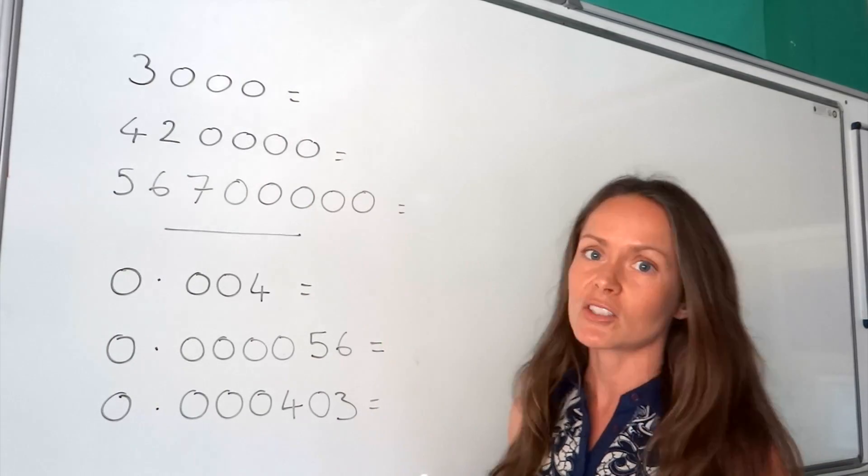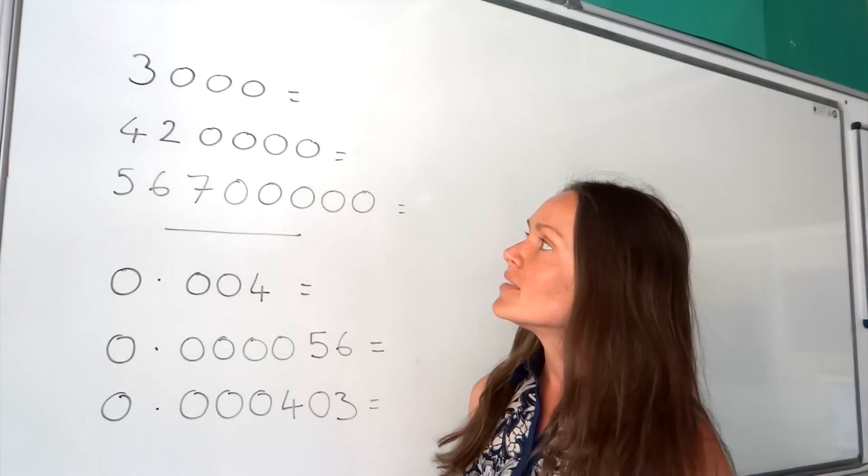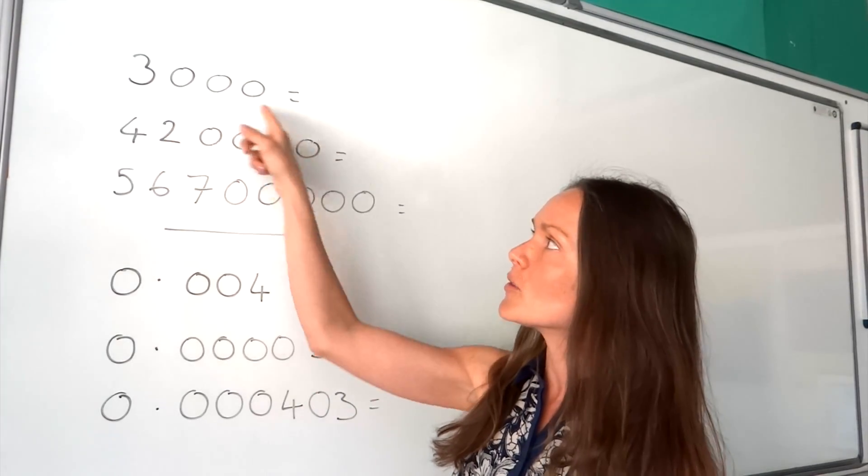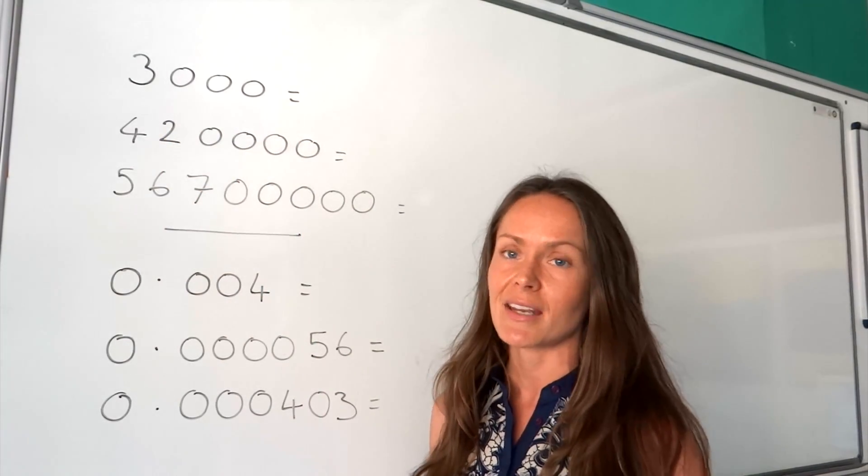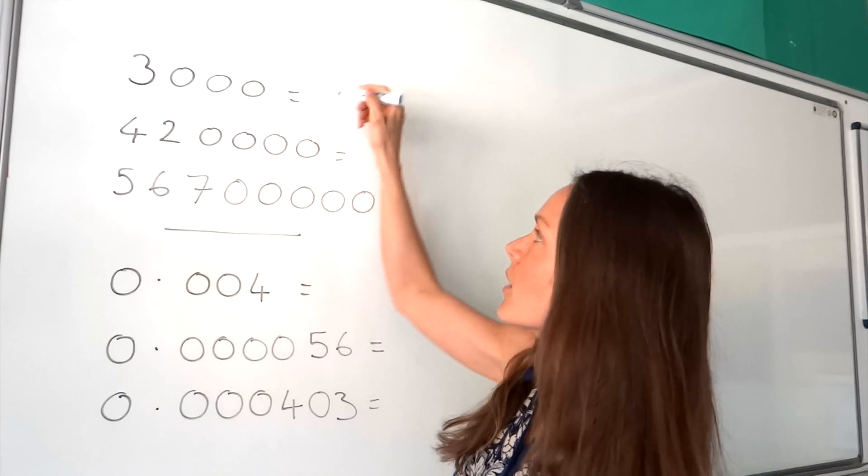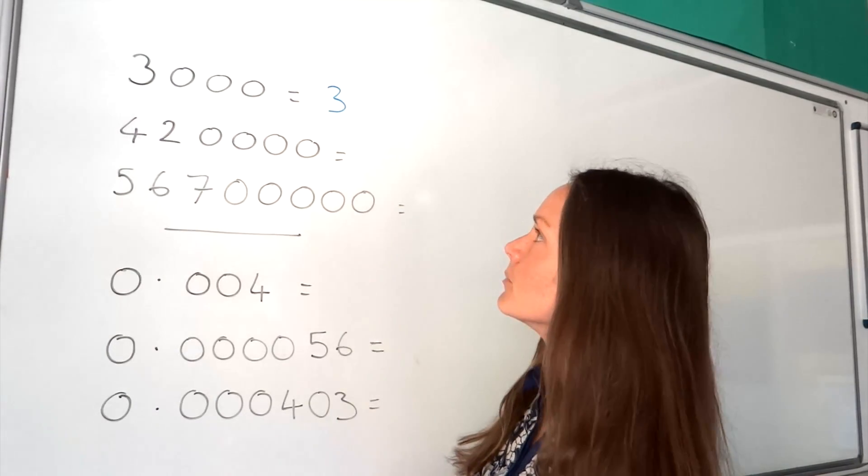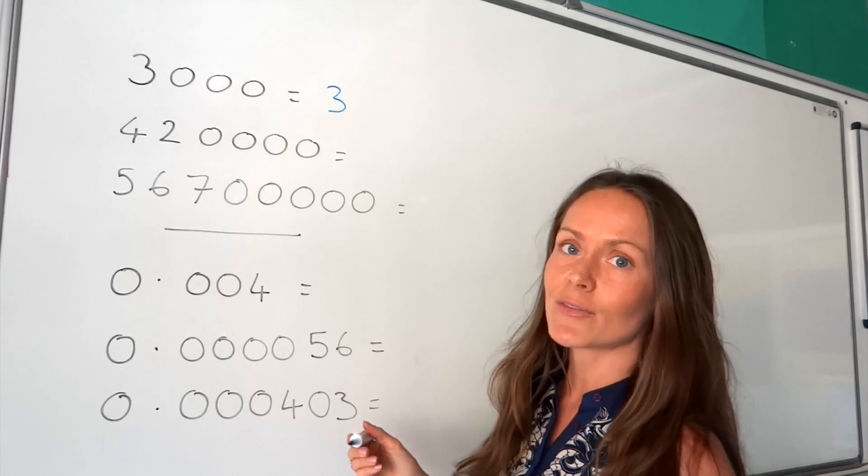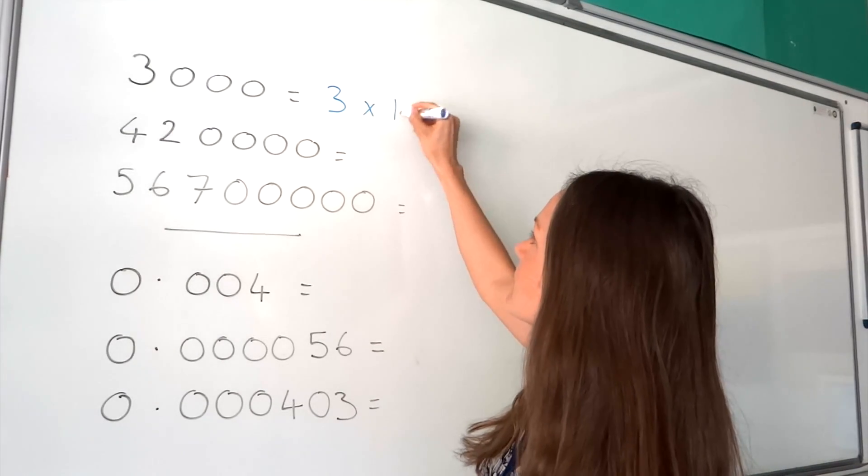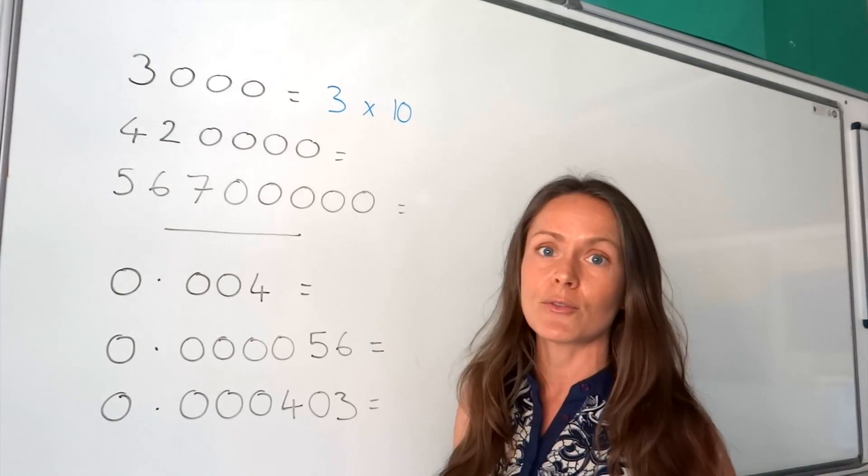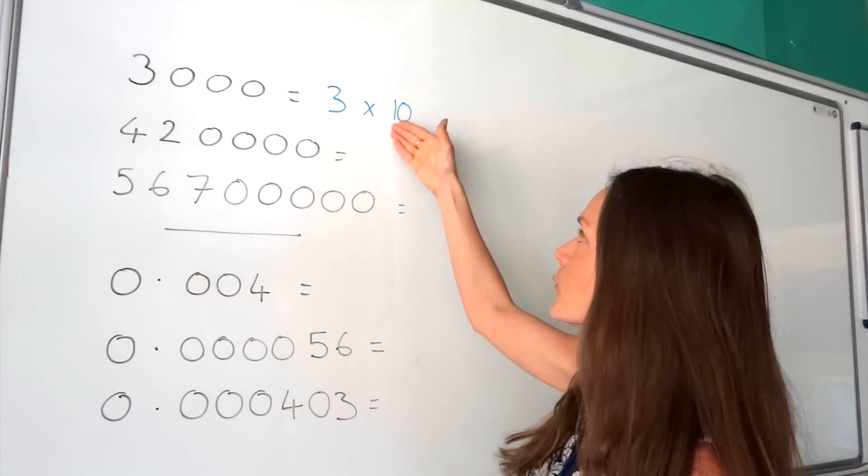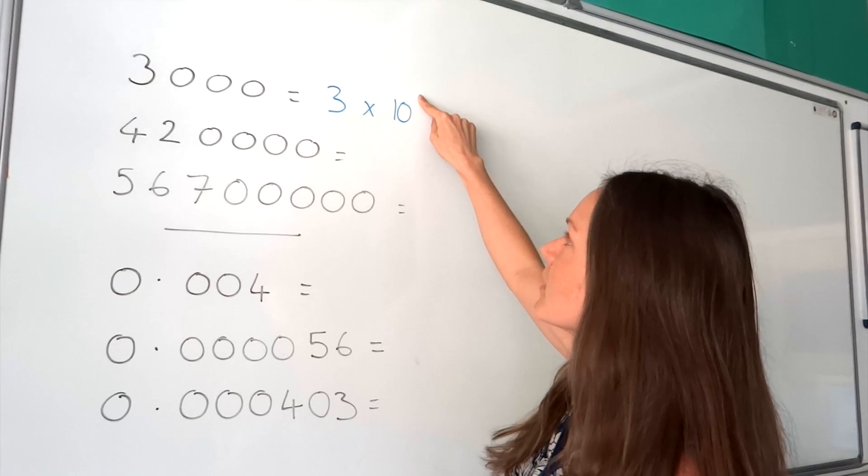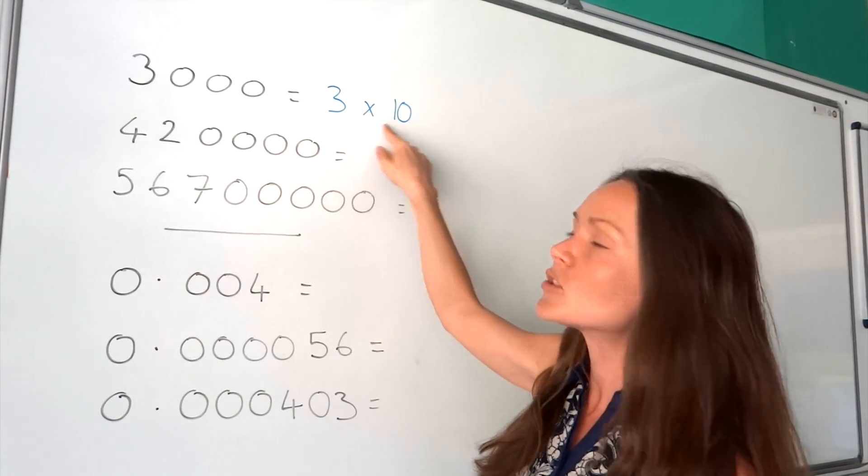So these are three large numbers. When we turn these numbers into standard form, we need to first of all write the number so that it's in between 1 and 10. So in the first example I'm going to write the number 3 because that number is between 1 and 10. Next I have to write times 10. Now when we're using standard form we always write times 10. It's just the format that we use.